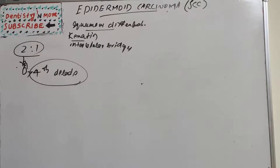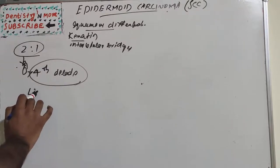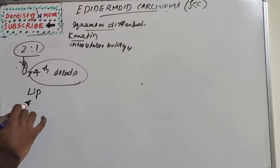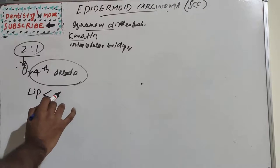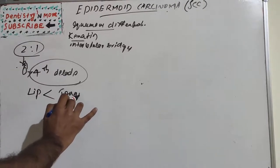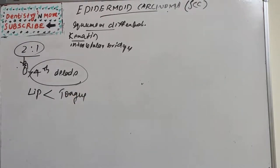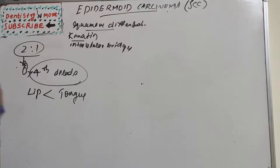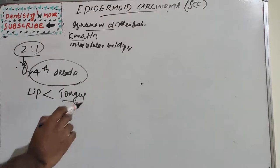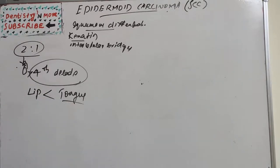The mortality rate is lowest for lip cancer and highest for tongue cancer. Sites include the lips, tongue, buccal mucosa, floor of the mouth, and palate. The most common site is the tongue and the least common is the lip.